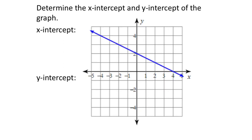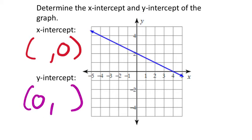On the next one, they've given us a line — we just have to identify the x and y-intercepts. I know my x-intercept will have a y value of 0, and my y-intercept will have an x value of 0. I can see this blue line goes through the x-axis at x equals 4, so the x-intercept is (4, 0). The y-intercept is where the line crosses the y-axis — there's a 2 right there, so that's (0, 2).